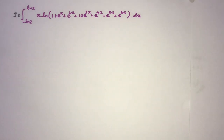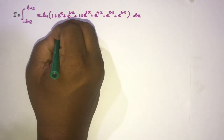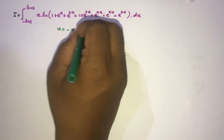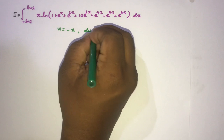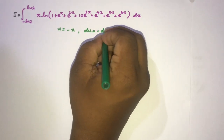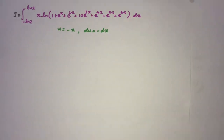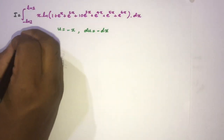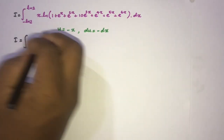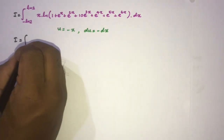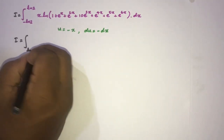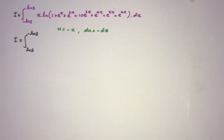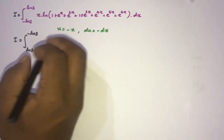First, we can take a substitution. If we let u equal to minus x, then differentiating gives du equal to minus dx. So we can write I with the limits changing: when x changes, the lower limit is minus natural log of 2.